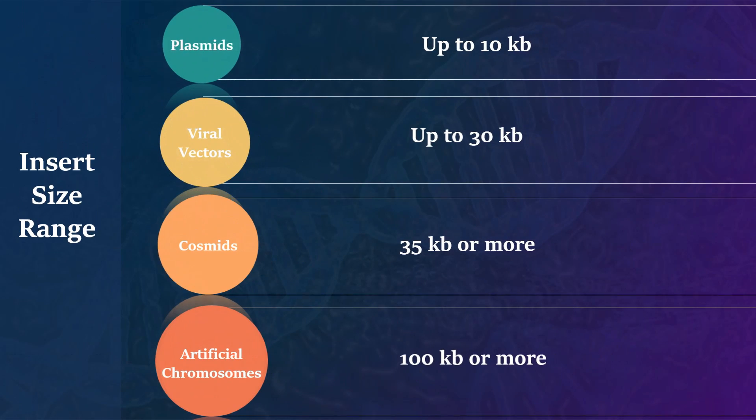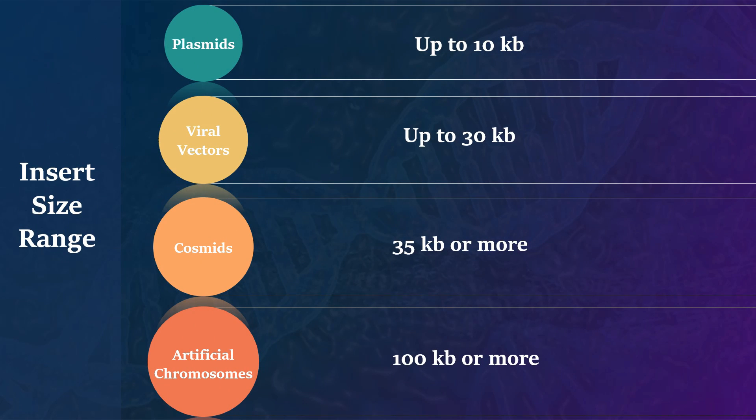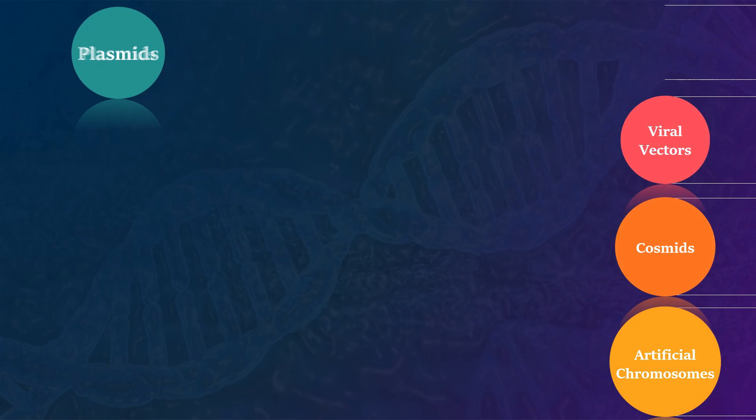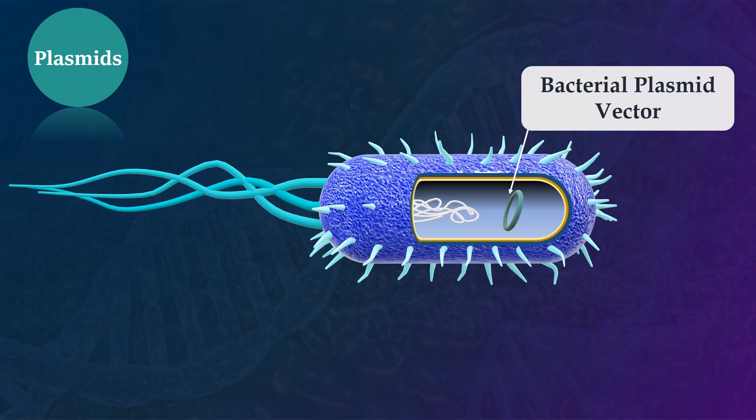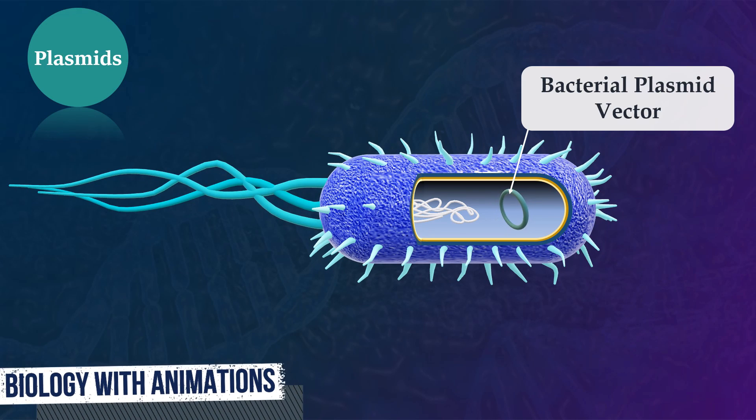The selection of a vector depends on the size of the insert DNA. In the case of large DNA molecules, artificial chromosomes can be used. Indeed, plasmids are the most commonly used. They are small, circular DNA molecules found in a variety of microorganisms, notably bacteria.